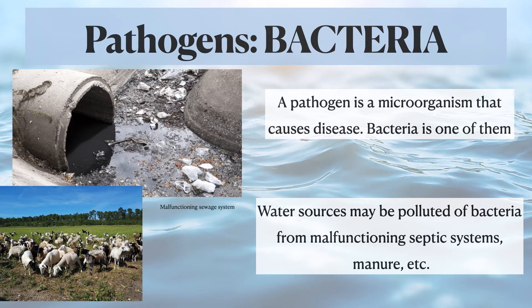Bacteria are pathogens or microorganisms that cause disease. The main pathogen in water pollution is bacteria, which sources mostly from animals in the form of fecal waste. Malfunctioning septic systems in residential areas, as well as manure from livestock on farmlands, can be sources of pollution. Bacteria originates mainly from agricultural land use as well as domestic land use. If this land use is properly taken care of with proper waste management systems, pathogens are less likely to enter our ground and surface water resources.